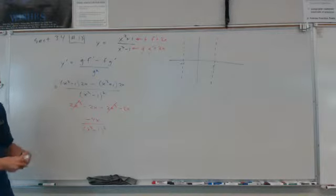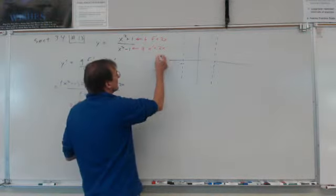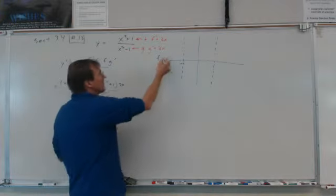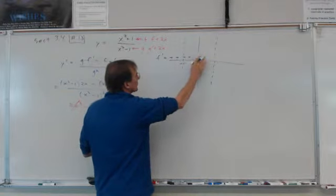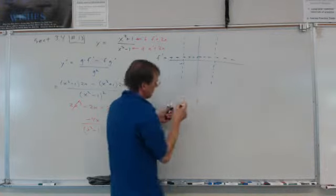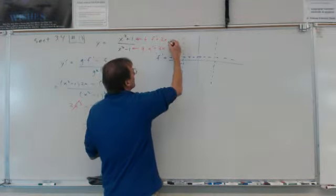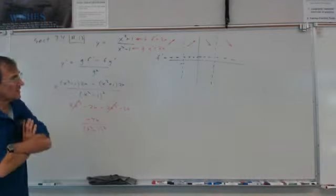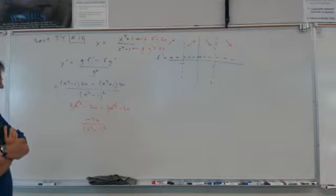That denominator will never equal 0, so we just have to look at the numerator. We can see that the first derivative will be positive wherever x is negative — negative 4 times a negative makes it positive. It's 0 at the origin, and negative everywhere x is positive. So the function is going up on the left and going down on the right, with asymptotes at plus and minus 1.